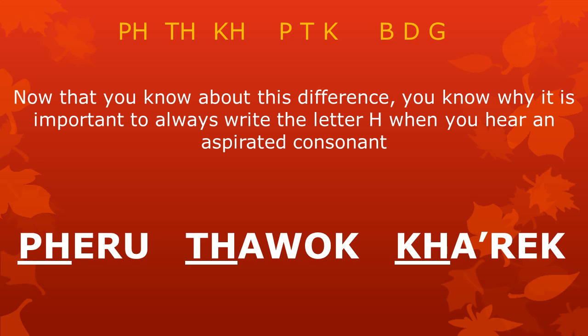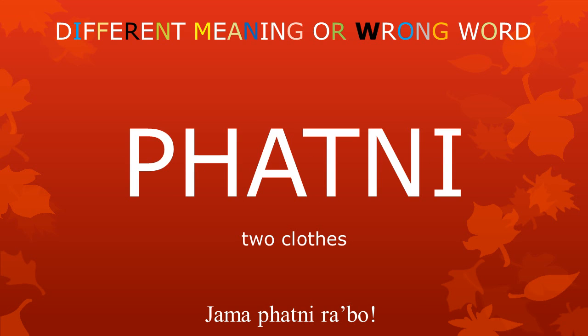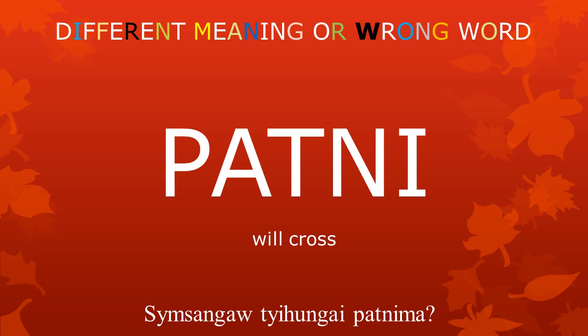Now that you know about this difference, you know why it is important to always write the letter H when you hear an aspirated consonant, as in the words pheru, thawok, or kha're. When you do not write the letter H when it is necessary, the meaning of the words may be different or just wrong. For example, if you do not write the H in phatni, meaning 'two clothes,' it will become patni, with a different meaning: 'will cross.'